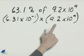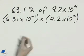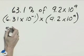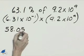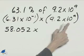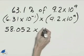Multiply 6.31 times 9.2. That's 58.052 times 10 to the negative 1, and 10 to the 9th becomes 10 to the 8th.